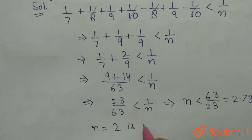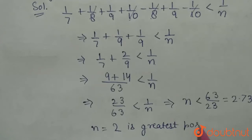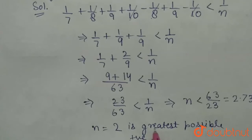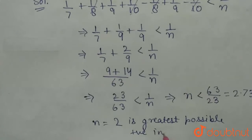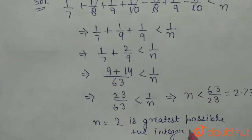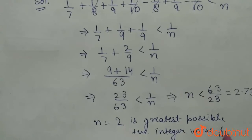So, 2 is the greatest possible positive integer value for n. Hence, our question is solved.